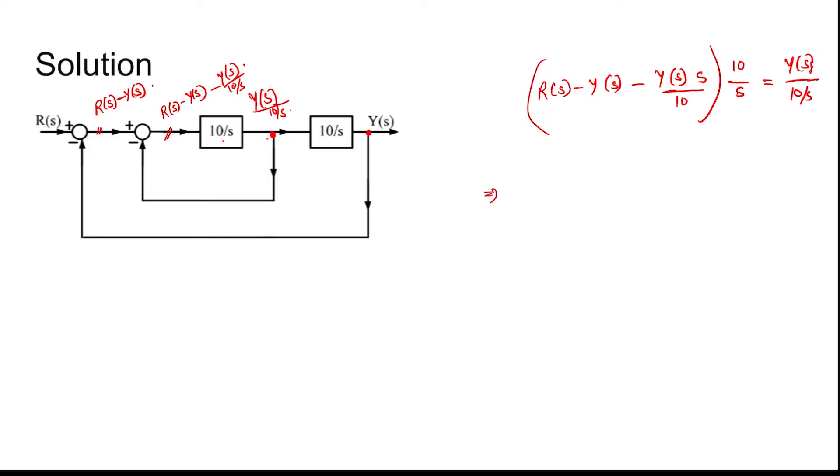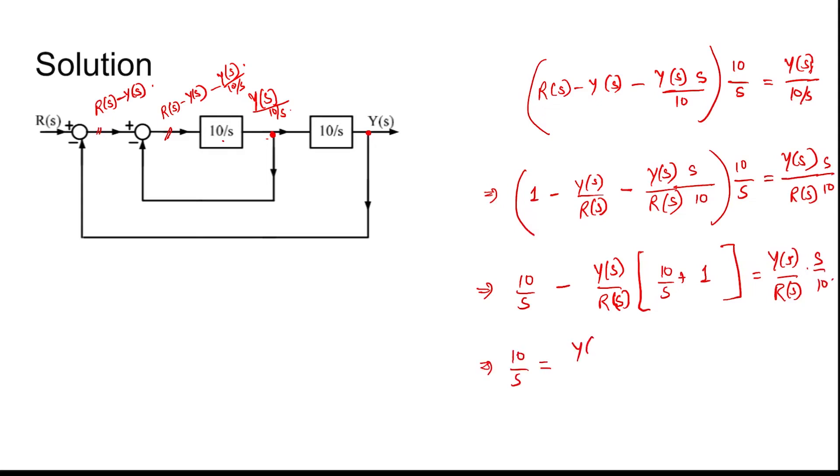So now if we divide by r(s), then we get y(s) by r(s) minus y(s) by r(s) into s by 10, into 10 by s. So you can write 10 by s times y(s) minus y(s) by r(s) minus y(s) by r(s) into s by 10, times 10 by s equal to y(s) by r(s).